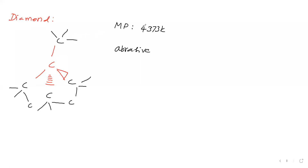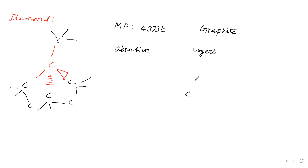Next allotrope of carbon is graphite, which is a crystalline form of carbon. In graphite, the structure consists of layers. Each carbon makes three single bonds with three other carbon atoms.